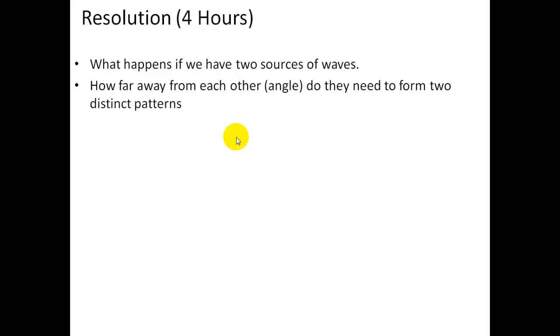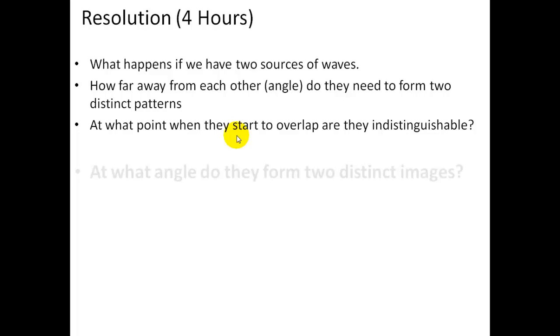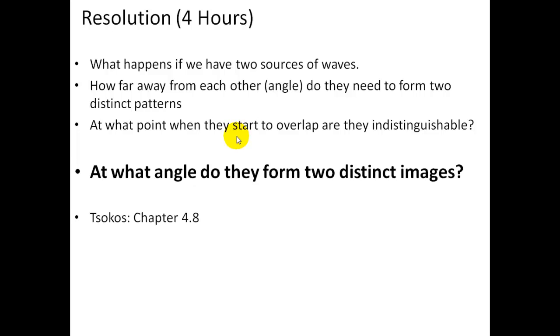They can be resolved, but where is the limit where they can be resolved? So the point at which they start to overlap but they're distinct, they're indistinguishable, where does this happen? In other words, what angle do they form two distinct images?